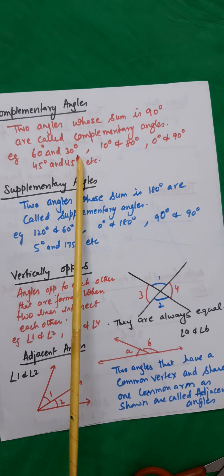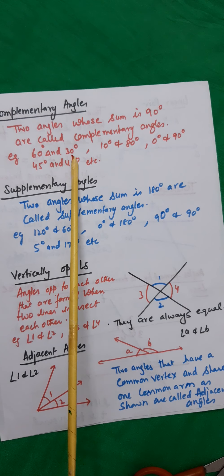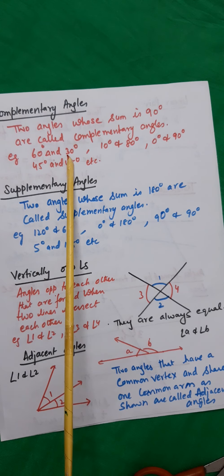What do we say? We say 60 is the complement of 30, because when we add 60 to 30, it makes 90.